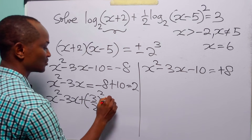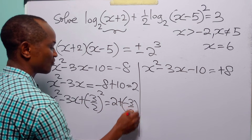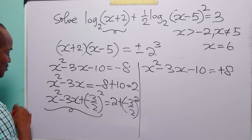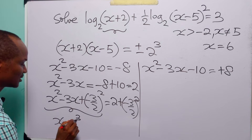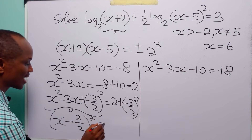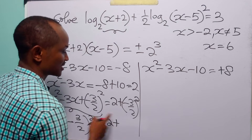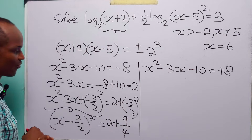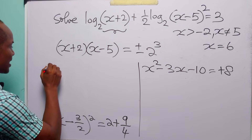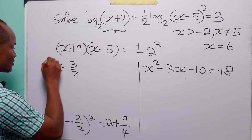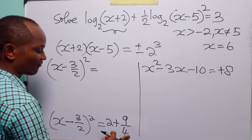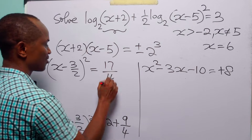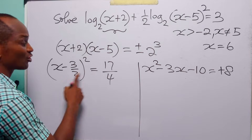We have x squared minus 3x plus (minus 3 over 2) squared equals 2 plus (minus 3 over 2) squared. The left-hand side is a perfect square: (x minus 3 over 2) squared. The right-hand side is 2 plus 9 over 4, so (x minus 3 over 2) squared equals 4 times 2 is 8, plus 9 is 17, giving 17 over 4.